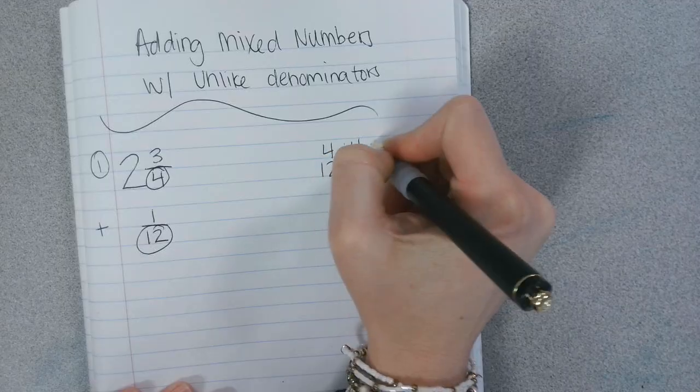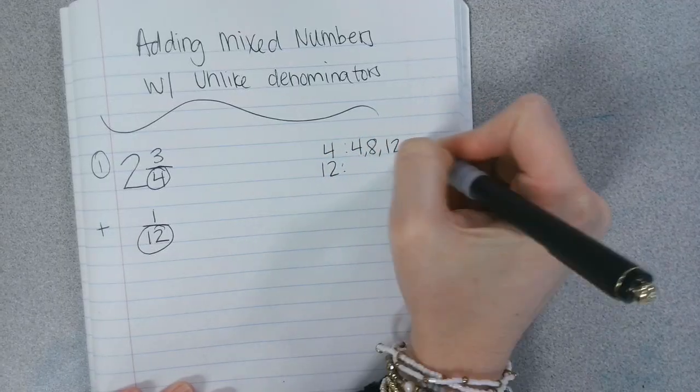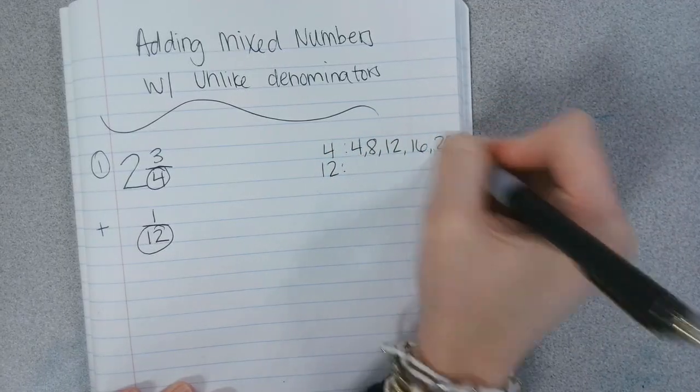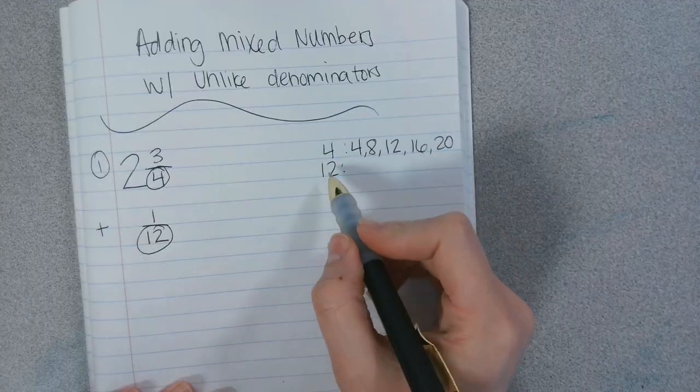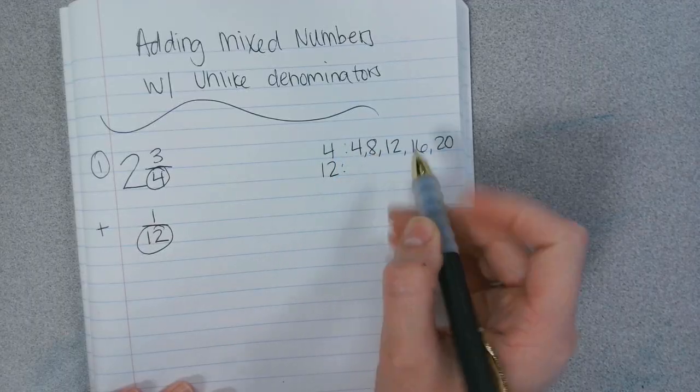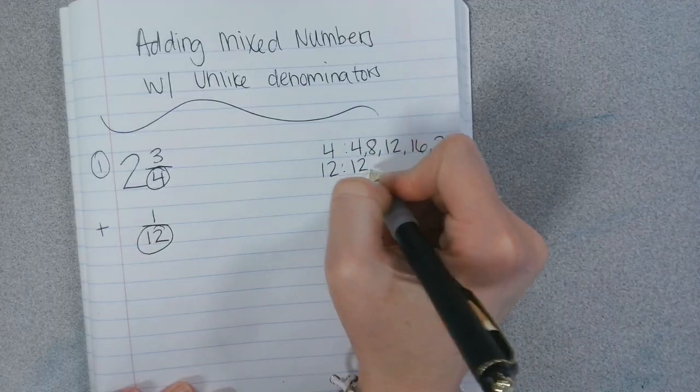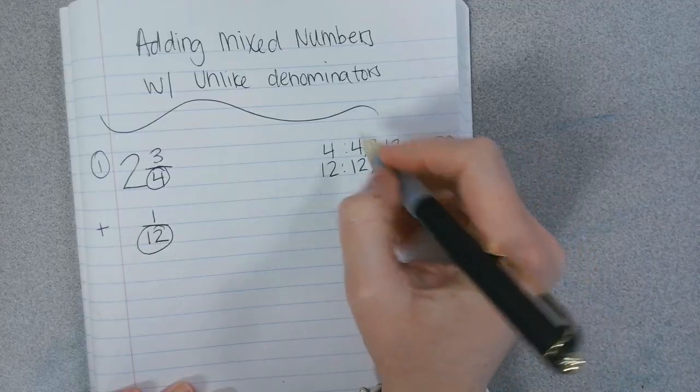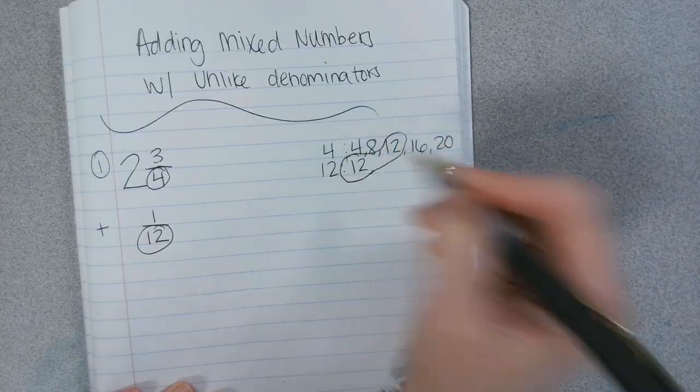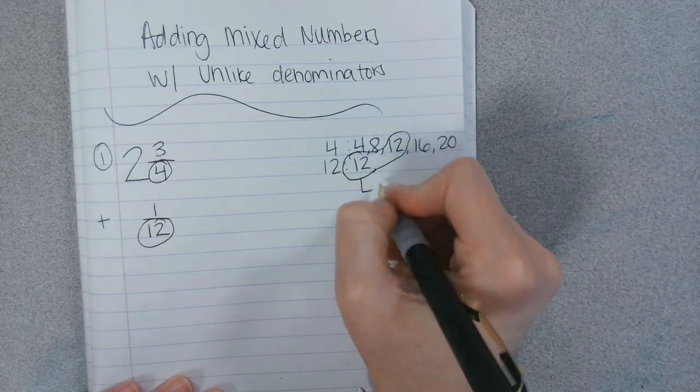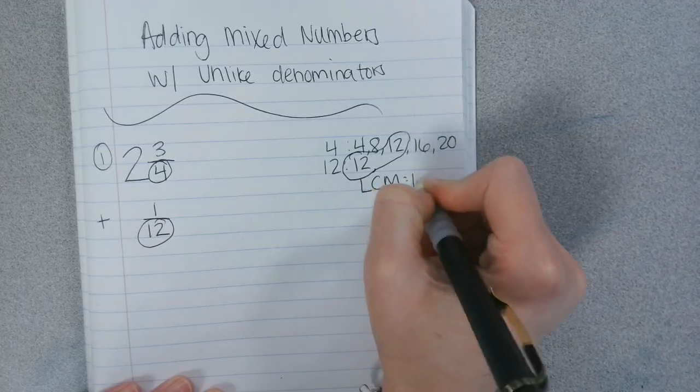So we're going to list our multiples of 4 and 12. Okay, 4, 8, 12, 16, 20. Same thing for 12 until we find something that's the same on that top row. Starting with 12. Can I stop there? I can, and I'm going to circle the common multiple. Least common multiple is 12.